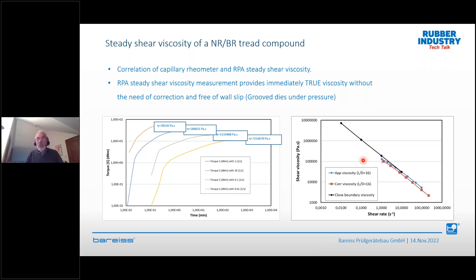At very low shear rate the capillary rheometer is not very good, whereas RPA Ultra steady shear is excellent. With the RPA Ultra capable of reaching 500 s⁻¹, the covered shear rate range is sufficient for almost all necessary conditions for extrusion, for instance.